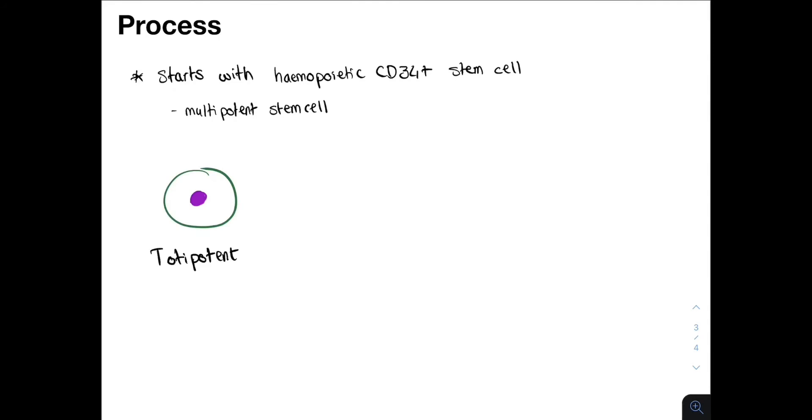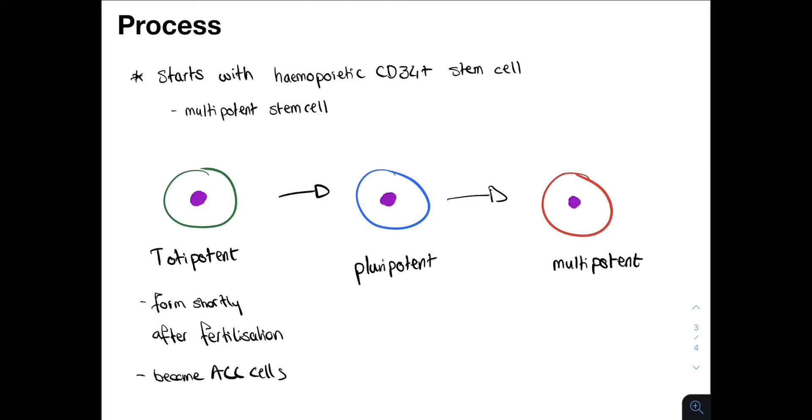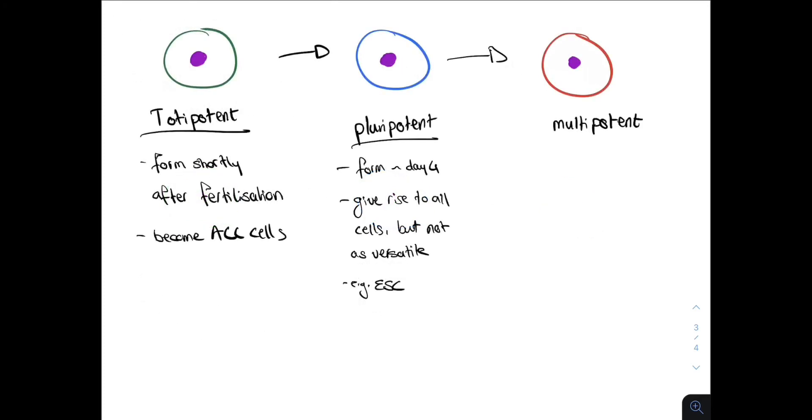So, we start with totipotent stem cells. These form pluripotent stem cells and these differentiate into multipotent stem cells. The totipotent stem cells, which is the zygote, is the most versatile. They are formed quickly after fertilization and can become all the cells in the body. The pluripotent stem cells are formed around 4 days. These are the embryonic stem cells and they can also form all cell types. However, they are less versatile than the totipotent stem cells.